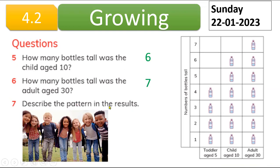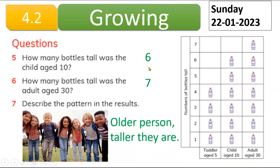Describe the pattern in the results. You can compare: children are six bottles tall and adults like mom and dad are seven bottles tall. So older people are more — they are taller than the children.